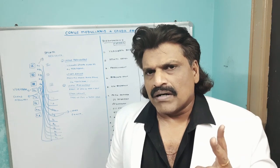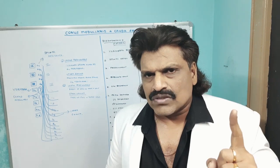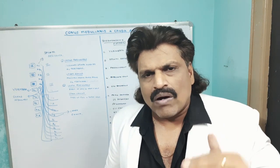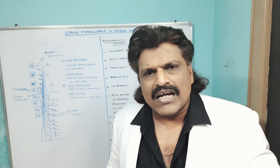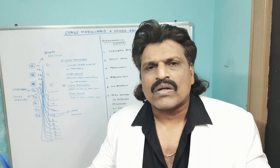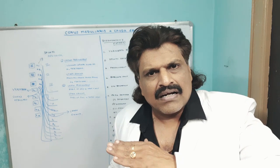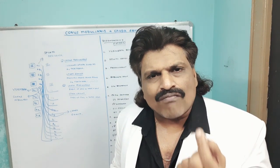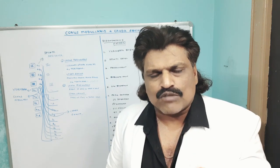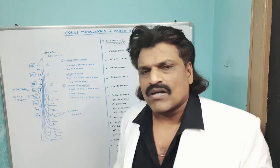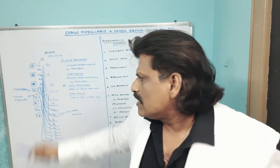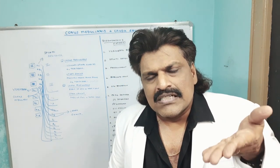Two important points to remember: one, the spinal cord ends at L1, so the tip of the spinal cord is at the level of L1 containing the sacral and coccygeal segments. Below the L1 vertebral body they are all nerve roots. So below L1, L2 contains the L2 root, L3 root, L4 root. Conus medullaris is the spinal cord at the level of L1 — the tip of the spinal cord containing the sacral and coccygeal segments, meaning S1 and below. Cauda equina is nothing but the spinal roots in the form of a horse tail below the L2 vertebral body, meaning L2 spinal nerve roots and below.